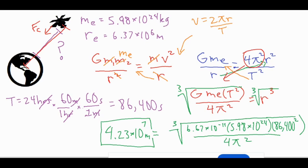So now that we plugged in all our values to find the radius we have to find the cube root of all of these numbers put together and we got 4.23 times 10 to the seventh meters.